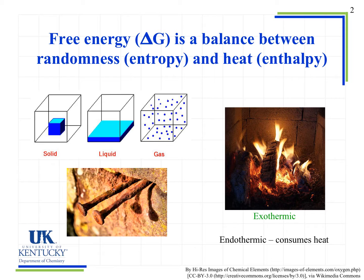So free energy, symbolized by delta G, is about the amount of energy that's actually available to do work. And it's actually a balance between the randomness or disorder of entropy and the heat of a reaction or the enthalpy.